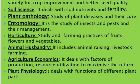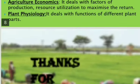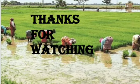If only vegetables, it is called olericulture. In animal husbandry, it includes animal raising and livestock farming. In agricultural economics, it deals with the factors of production and resource utilization to maximize returns and healthy entrepreneurship. In plant physiology, it deals with the functions of different plant parts. Thanks for watching — stay home, stay safe.